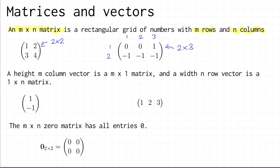In Math 5 we'll regard vectors as being special cases of matrices. A height-m column vector just means an m by one matrix — a matrix with m rows and just one column. A width-n row vector will be a one by n matrix — a matrix with one row and n columns. We write ℝⁿ to mean all height-n column vectors with real numbers as entries.